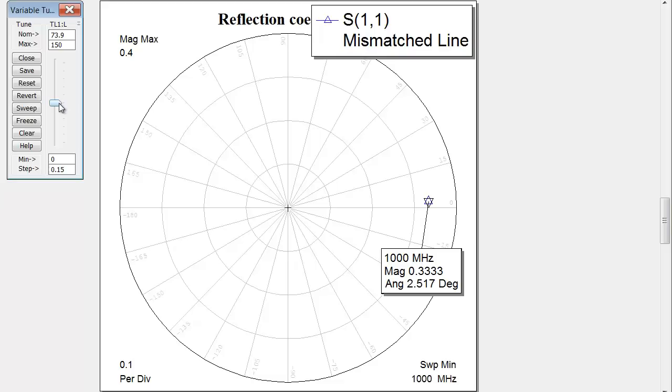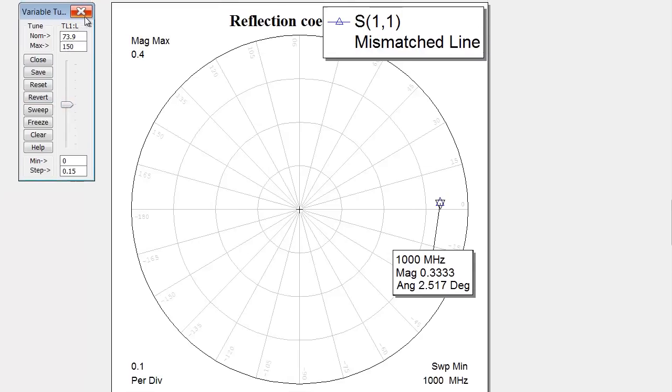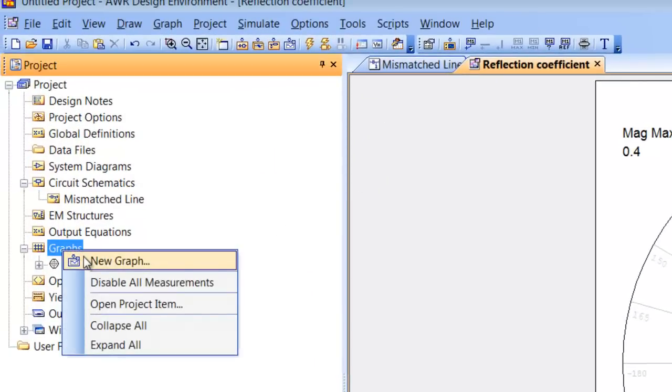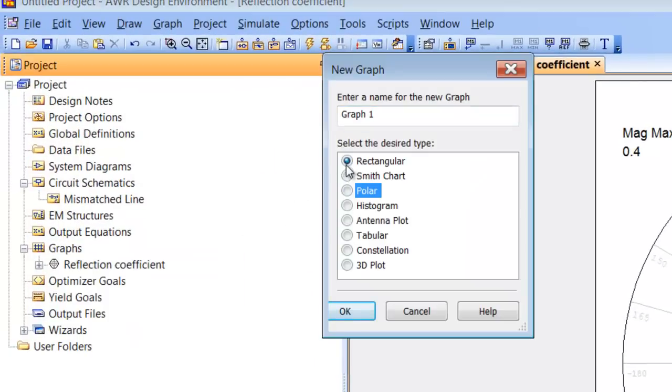Now this ties in very well with the fact that the VSWR, which is related to the magnitude of the reflection coefficient, is not dependent on the length of the line. Let's just verify that. So let's close the Tune for a moment. Go to graphs, new graph, this time choose a rectangular graph. Click on OK.